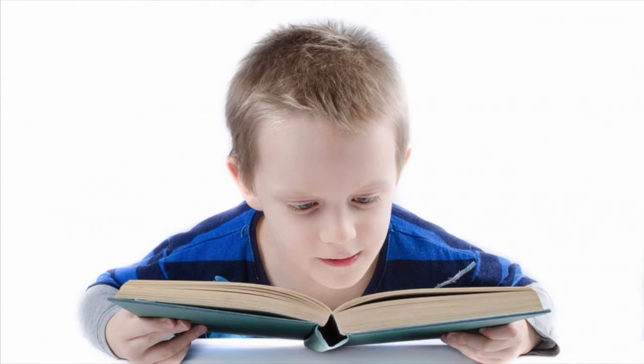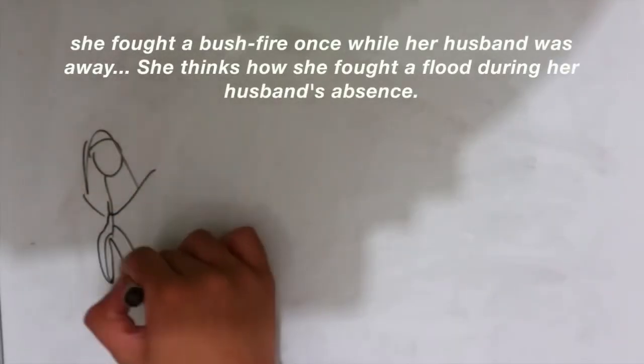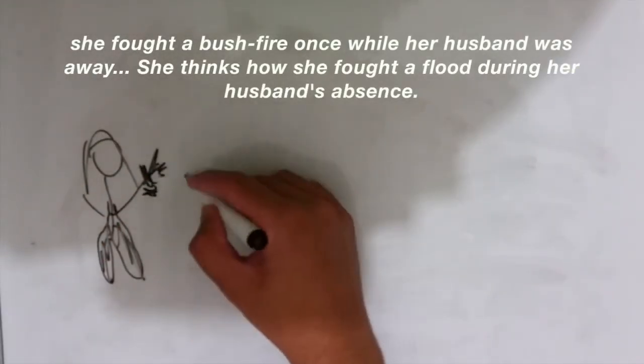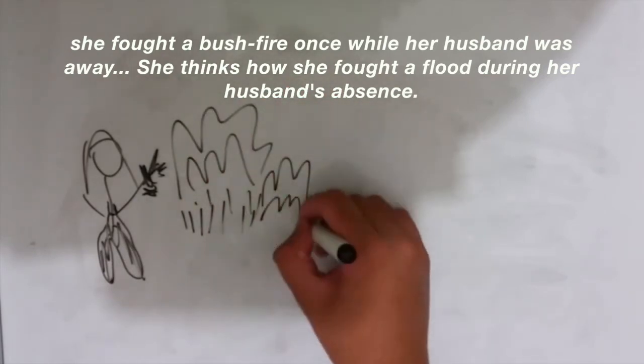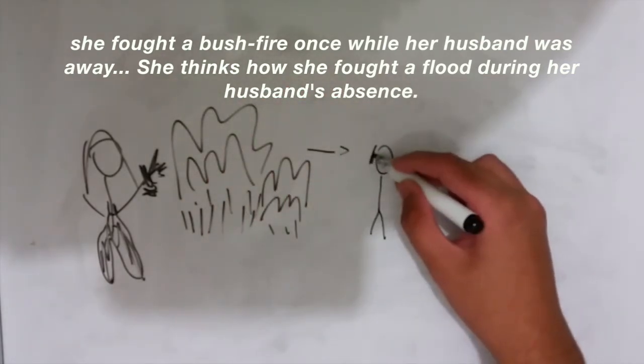Visualisation of action creates interest as something dramatic is happening through the interaction of characters, and we see their exertion in relation to hard times and the proceedings they undertake to overcome obstacles. In the line: 'She fought a bush fire once while her husband was away,' and she thinks how she fought a flood during her husband's absence.